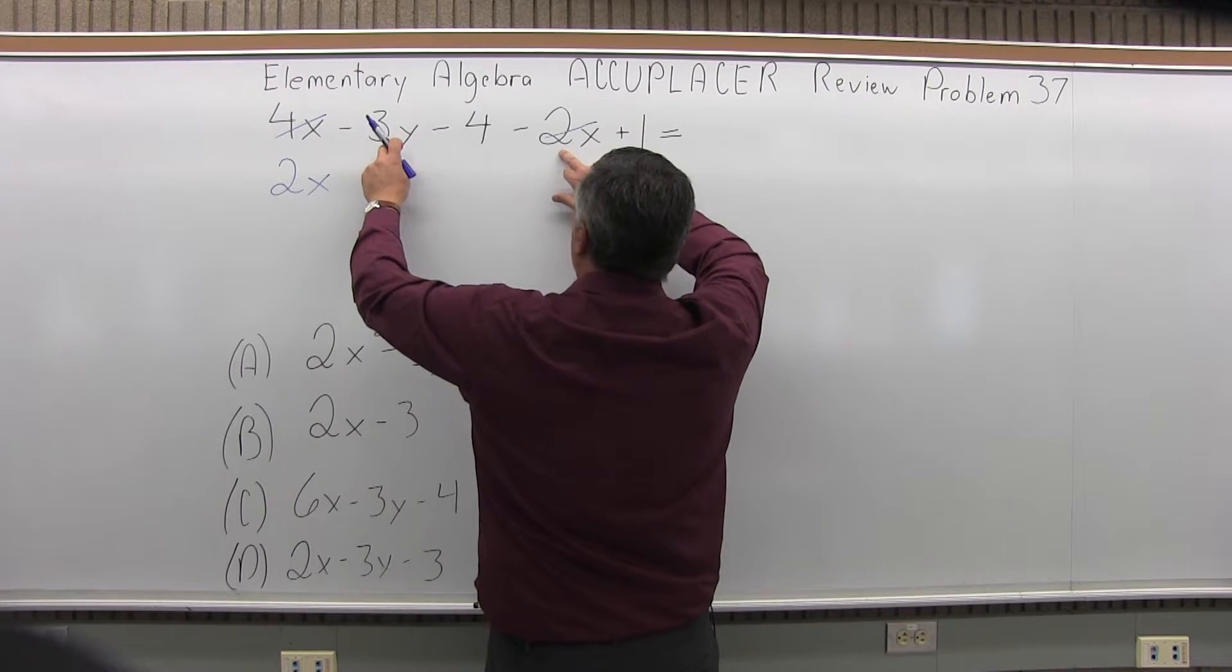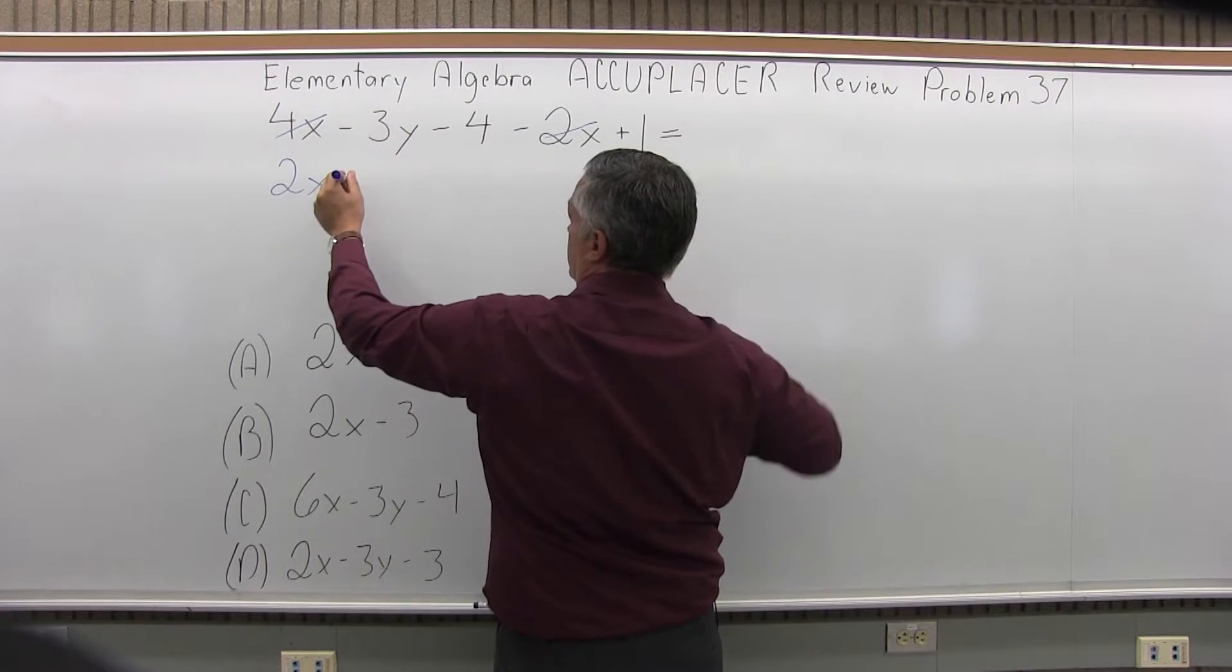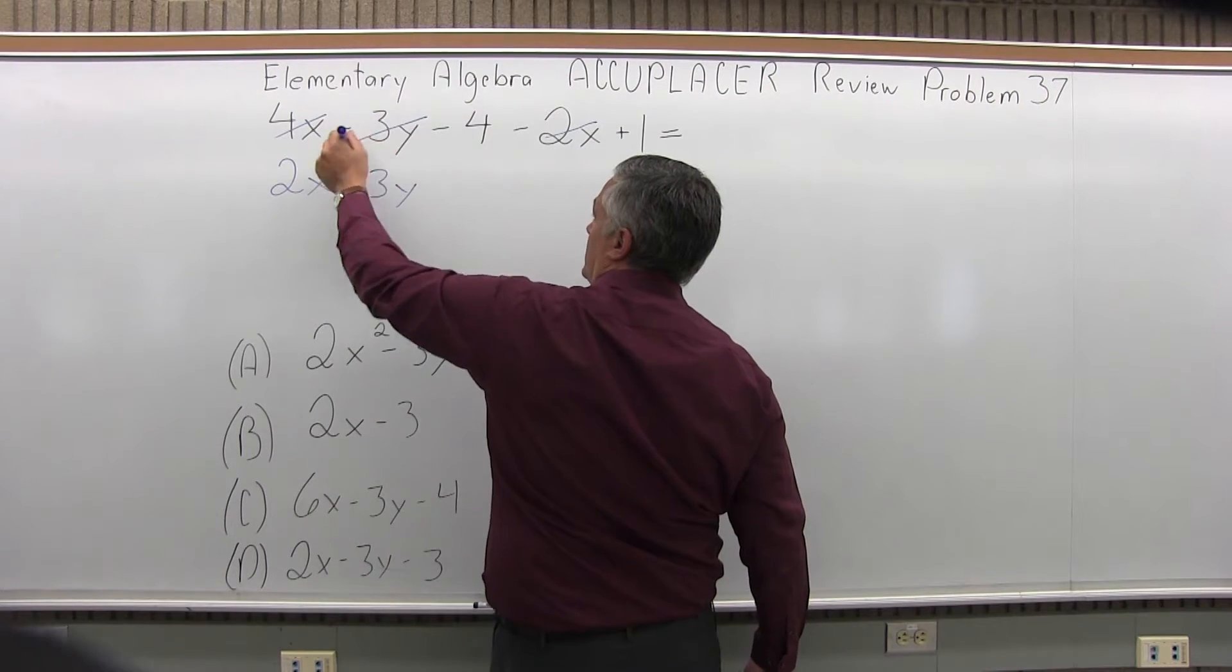Now I'll do the y's next. I have minus 3y. There are no other y's, so that's easy. It'll just stay minus 3y. That piece is done.